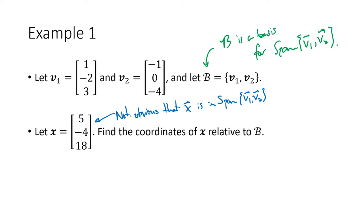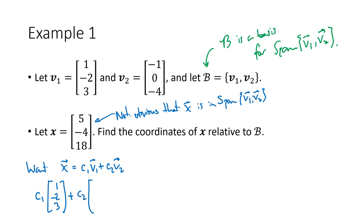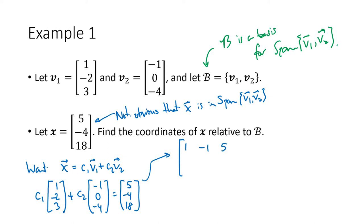So how do we find the coordinates? We want scalars c1 and c2 so that x = c1·v1 + c2·v2. There should be one and only one way to do this, which means we're solving a vector equation: c1 times (1, −2, 3) plus c2 times (−1, 0, −4) equals x = (5, −4, 18). We know how to solve that — we set up and row reduce an augmented matrix. That matrix has first row 1, −1, 5; second row −2, 0, −4; and third row 3, −4, 18.